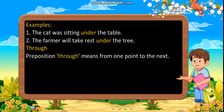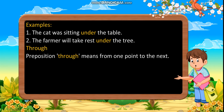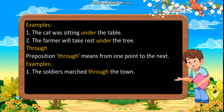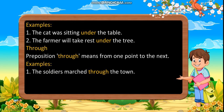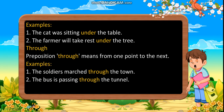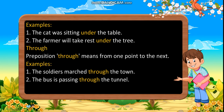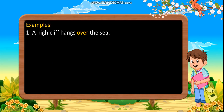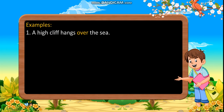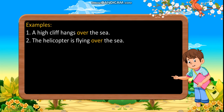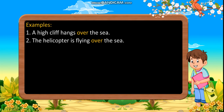Through: preposition through means from one point to the next. Examples: first, the soldiers marched through the town. Second, the bus is passing through the tunnel. Over: first, a high cliff hangs over the sea. Second, the helicopter is flying over the sea.